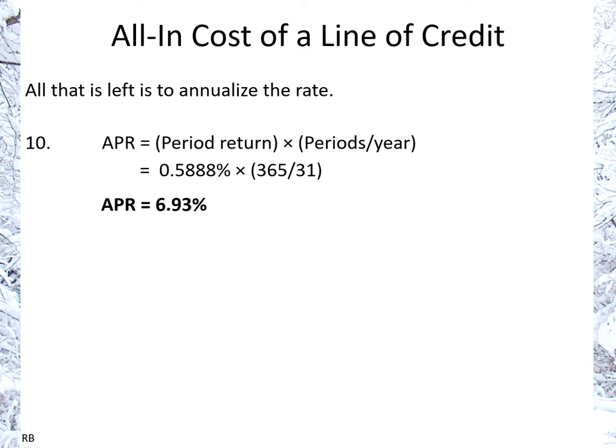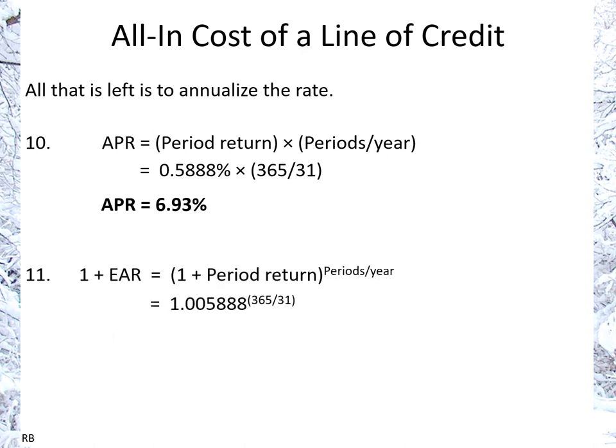Some people would just multiply the answer by 12 — taking May times 12 — and there's not a big significant difference between the answers. I tend to prefer using the actual number of days because shorter months are shorter and longer months are longer. The APR here is 6.93%. For the effective annual rate, the equation is: 1 plus EAR equals 1 plus the period return to the power of the periods per year. Using 0.5888% and 365 over 31 periods, that gives us an effective annual rate of 7.16%.